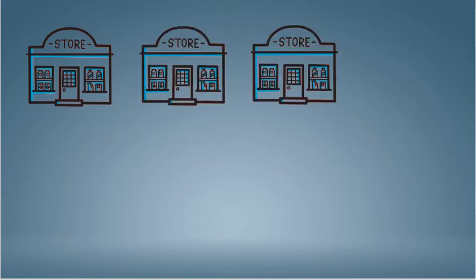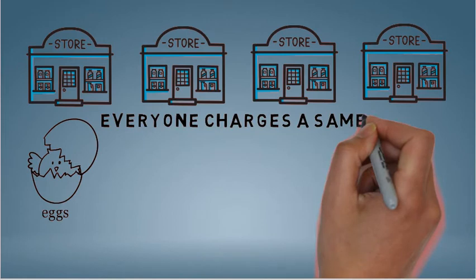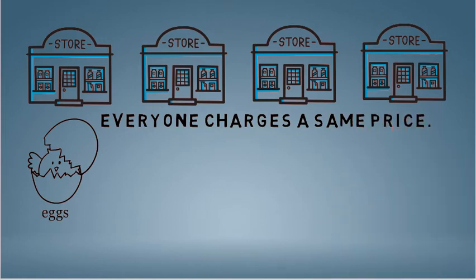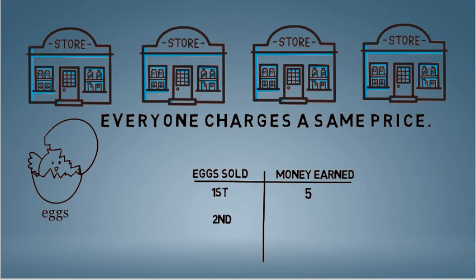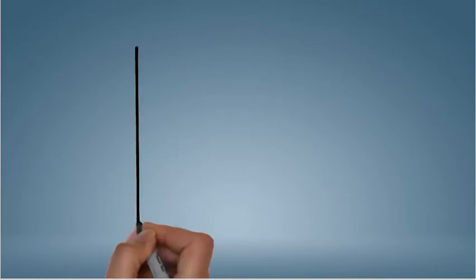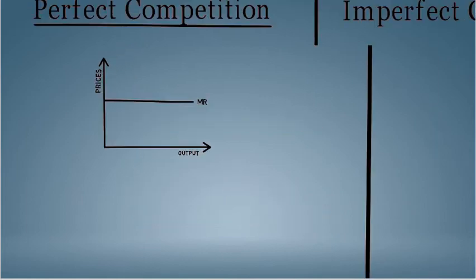Perfect competition is a situation where firms are selling identical products, for example eggs. Hence, in such a market, all the firms have to charge a uniform price, otherwise they lose customers. Hence, the price of every additional egg that the firm sells will remain the same. Because of this, the marginal revenue curve in perfect competition will be a straight line showcasing constant revenue earned.